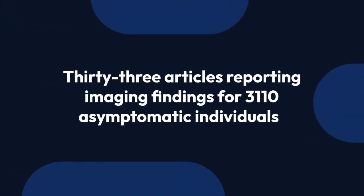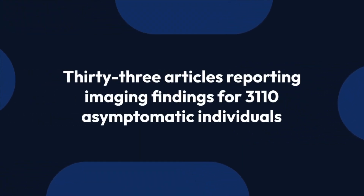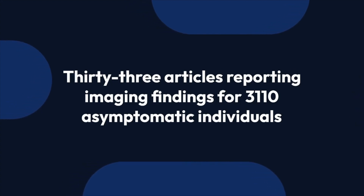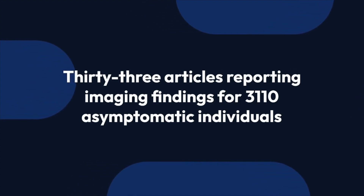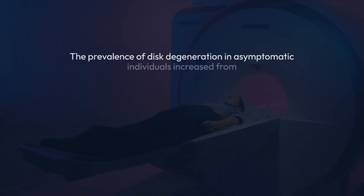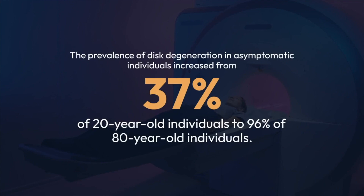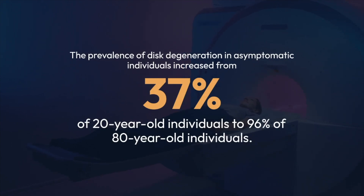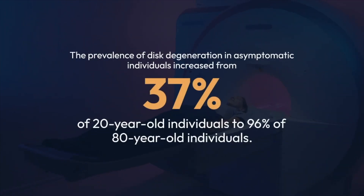Within 33 articles reporting imaging findings, 3,110 asymptomatic individuals participated. The prevalence of degeneration in asymptomatic individuals increases from 37 percent of 20-year-olds to 96 percent of 80-year-olds, meaning degenerative changes increase massively with age.